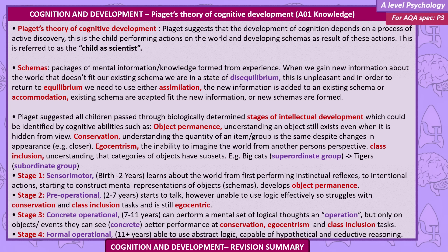Conservation is understanding that the quantity of an item or group is the same despite changes in appearance. Egocentrism is the inability to imagine the world from another's perspective. Class inclusion is understanding that categories of objects have subsets — for example, big cats as a superordinate group, and tigers as a subordinate group.